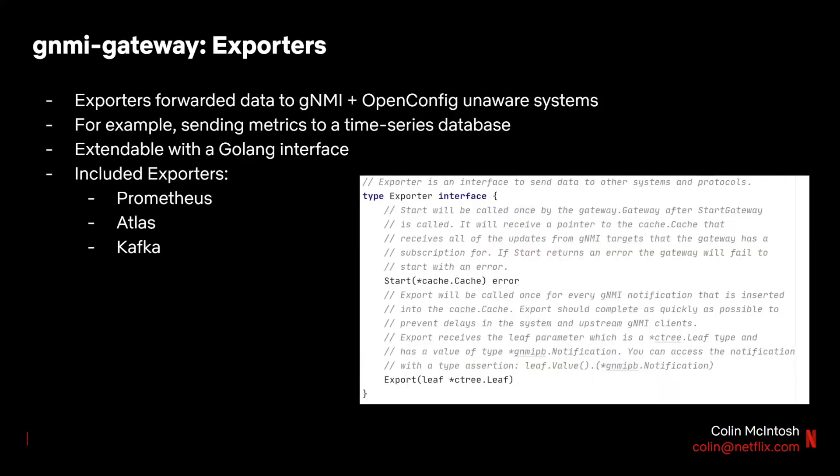On the other side of GNMI Gateway, we have exporters which forward data to non-GNMI services. For example, exporters can forward data to your NMS to keep collected state up to date, or forward metrics to a time series database. As with target loaders, we've included a few exporters to help get you started from the command line, such as Prometheus, Atlas, and Kafka. Exporters are also extendable with a simple Golang interface.